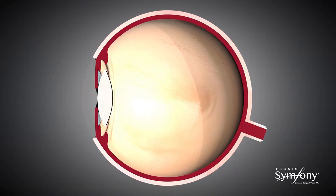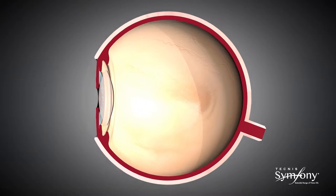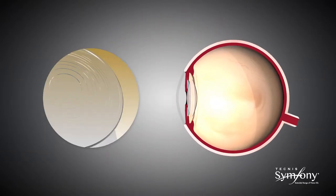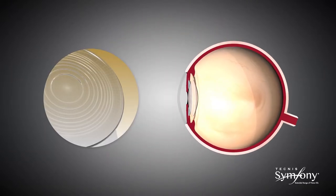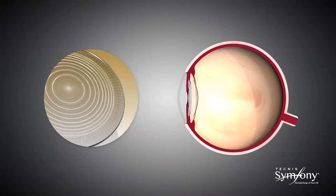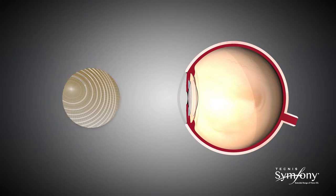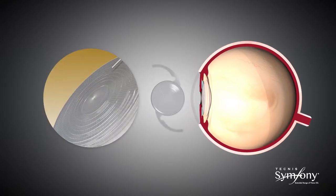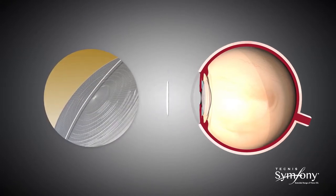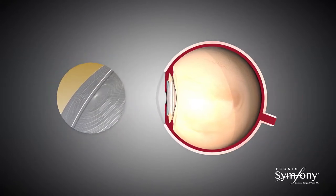Technis Symphony IOL delivers on this promise by utilizing two proprietary complementary enabling technologies: the Echelette design that extends the depth of focus, and the achromatic technology which corrects chromatic aberration.